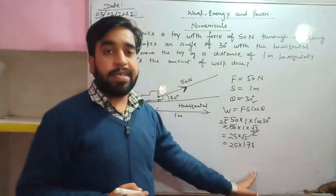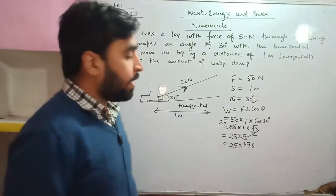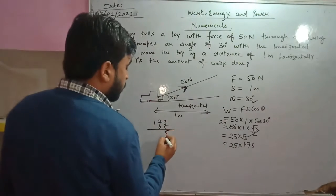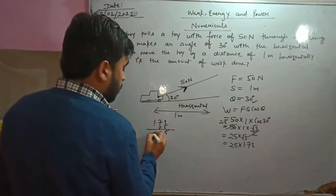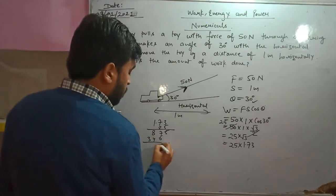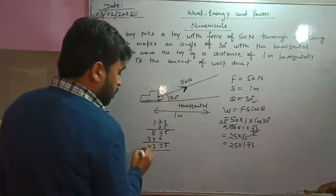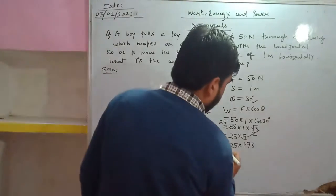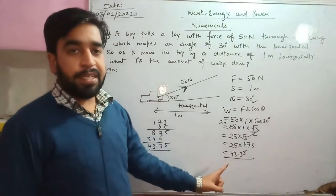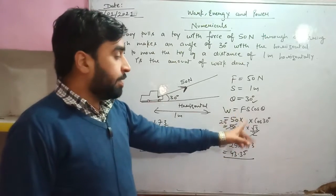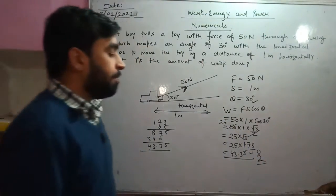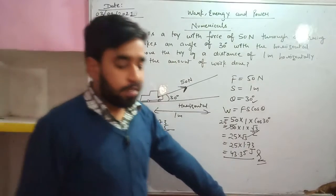The value of √3 is 1.73 (to two decimal places we can also use 1.732, but let's use 1.73). So 25 × 1.73 = 43.35. The unit of work is joules — force in newtons, displacement in meters gives joules. So the answer is 43.35 joules.